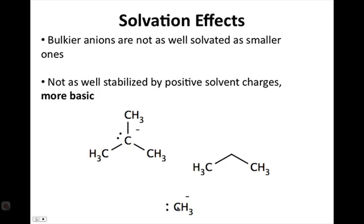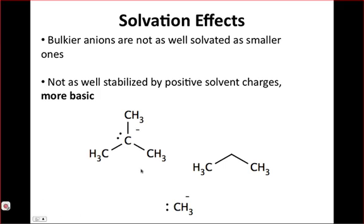And finally, solvation effects are the last effect that we'll look at in terms of the stability of anions. Interestingly, bulkier anions are found to be not as well-solvated and more unstable than smaller ones. We can attribute this to the idea that solvents, particularly polar ones, will have positive regions. And these positive regions, I'll just label with little positive charges, have the potential to get close to the negative charge and stabilize it.